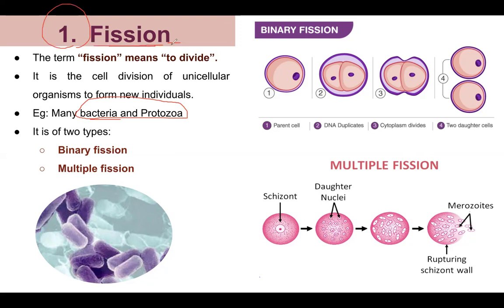Fission — the word means to break or divide. In unicellular organisms, the single cell divides and produces new individuals, new offspring. This creates new organisms like new bacteria and protozoa. There are two kinds of fission: first is binary fission, and second is multiple fission.